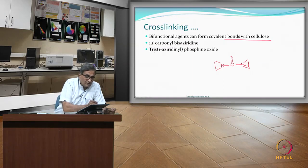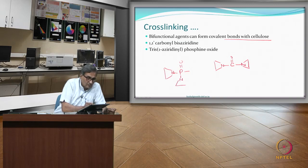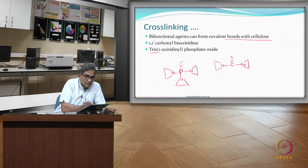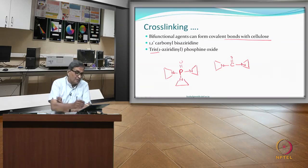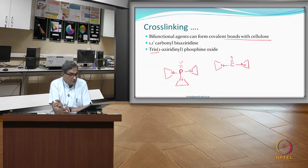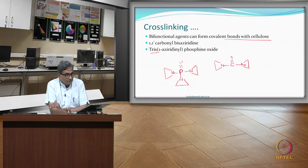Another interesting compound is based on a phosphine oxide with three aziridine groups — a tris-aziridine compound. A bifunctional agent gives a cross-link with more flexibility, while a trifunctional compound like this gives a stiffer result, but importantly it also introduces phosphorus into the structure, which can serve as a good flame retardant.